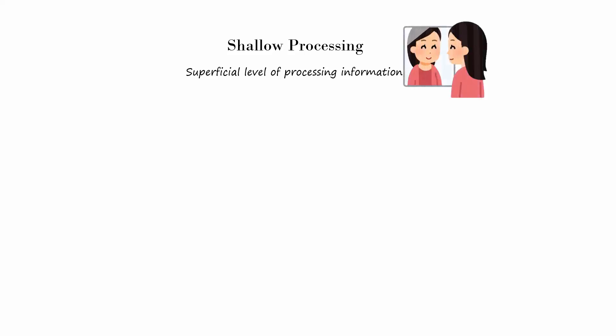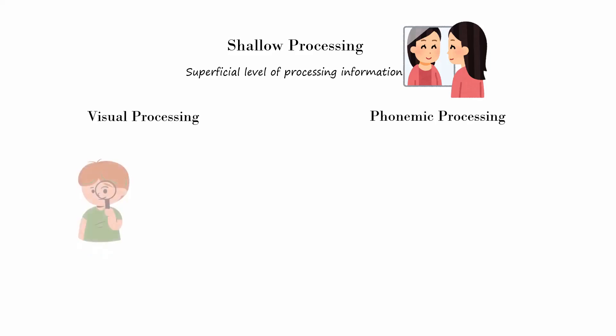Shallow processing involves focusing on superficial characteristics of the information — it's just like looking at the face value of something without engaging with its deeper meaning. Shallow processing is done through two distinct levels: one is visual processing and the other is phonemic processing. In visual processing, we focus on the appearance of the information.